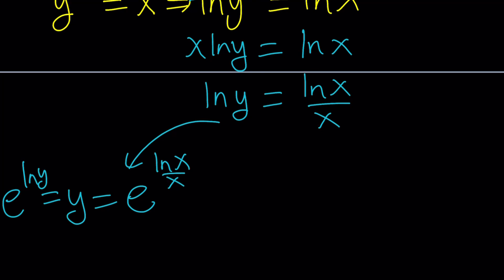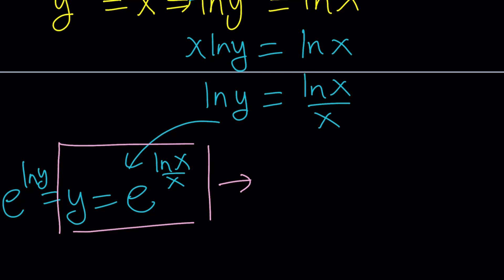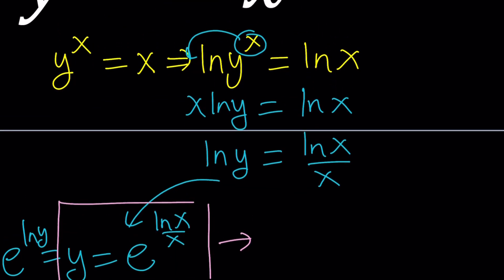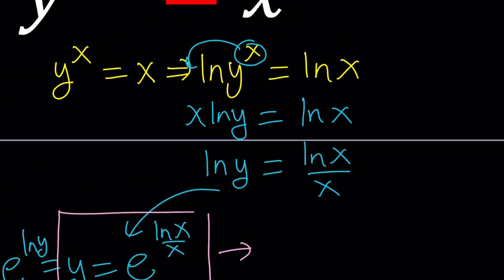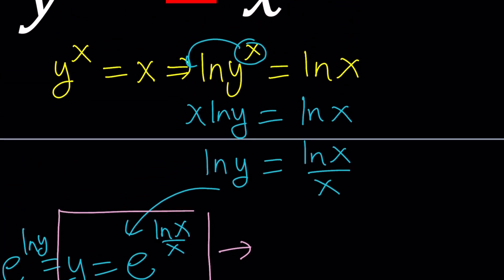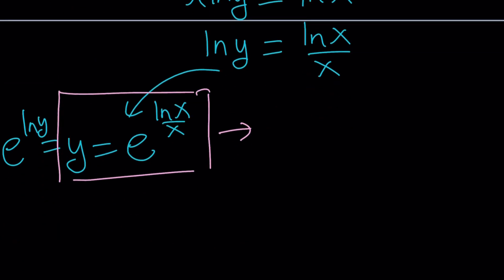Now this is nice because we can definitely differentiate this using properties of derivatives. But if we try to differentiate the original expression, that would be hard. We could still use implicit differentiation, but when the base and the exponent are both variables, then differentiation is harder unless you use the exponential function. Anyways, that's what we did.